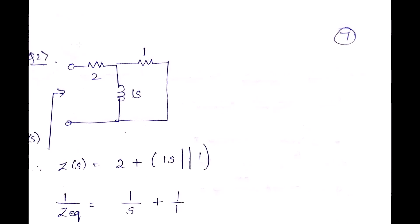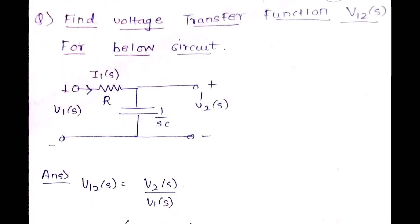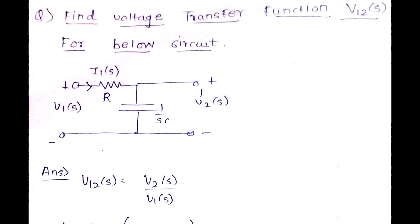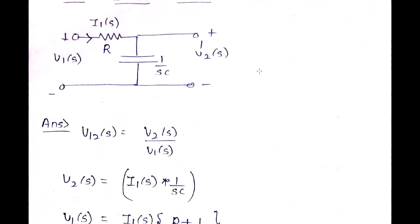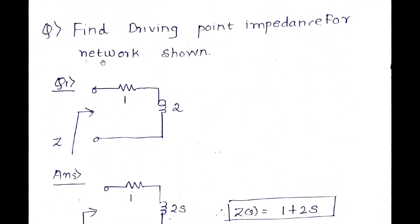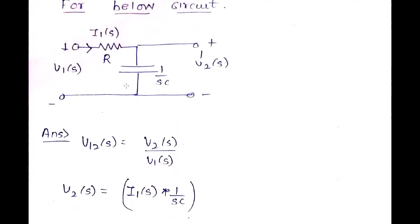Now we solve a transfer function example. The question asks to find the voltage transfer function V12(s) for the given circuit. V12(s) means V2(s) / V1(s) — voltage at port 2 divided by voltage at port 1. This is a transfer function and not a driving point function because both ports are involved, unlike the previous numericals which involved only one port.